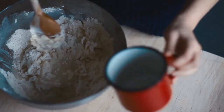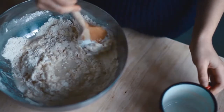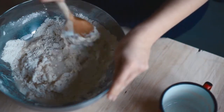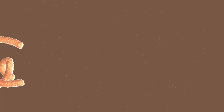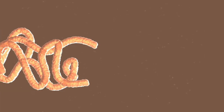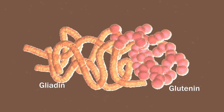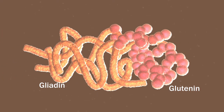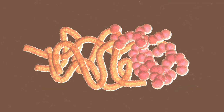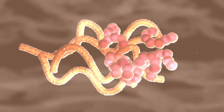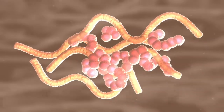Gluten formation begins when wheat flour is mixed with water. The water partially hydrates the two proteins that combine to make gluten, gliadin and glutenin. This partial hydration unfolds the protein, exposing non-polar amino acids and the sulfur-containing group of the amino acid cysteine.